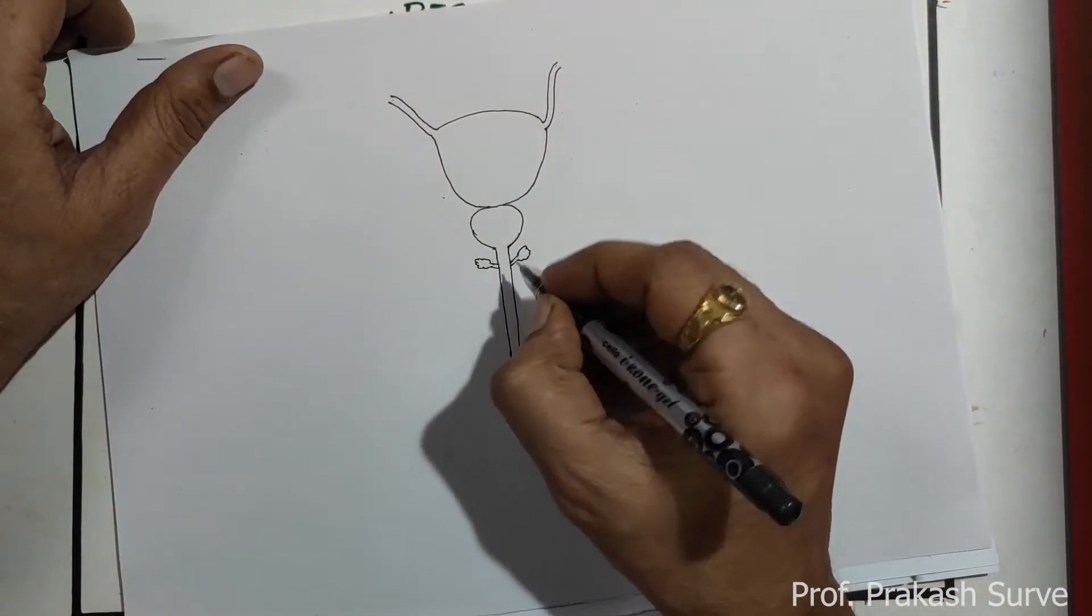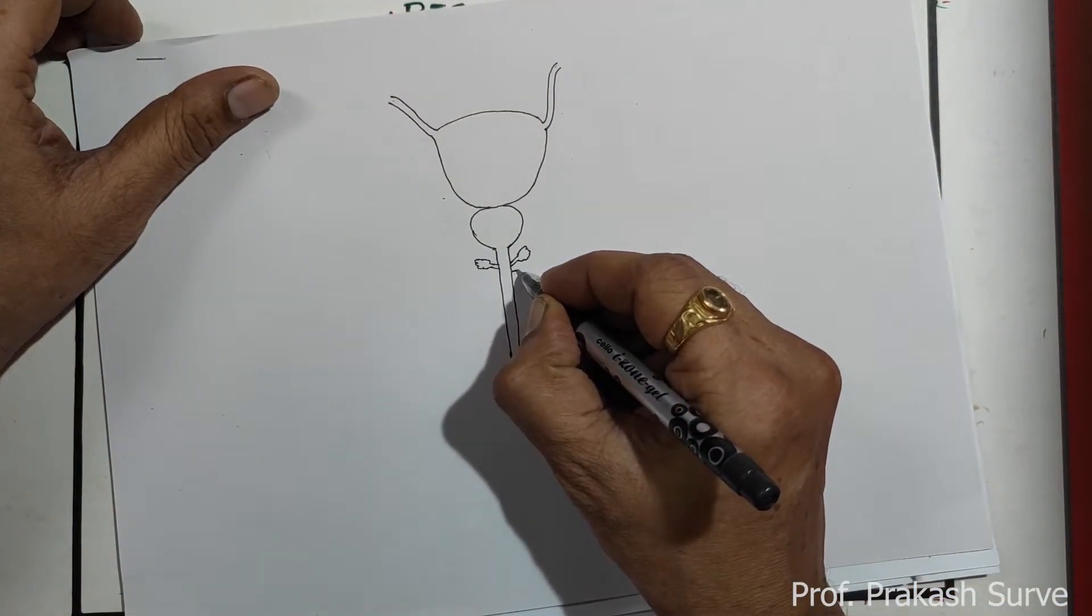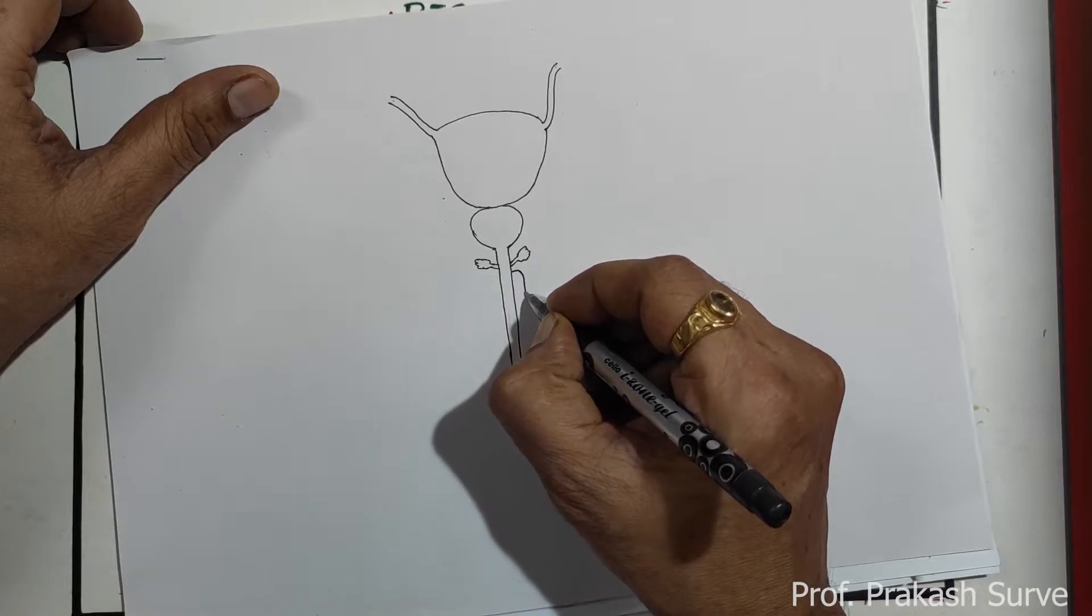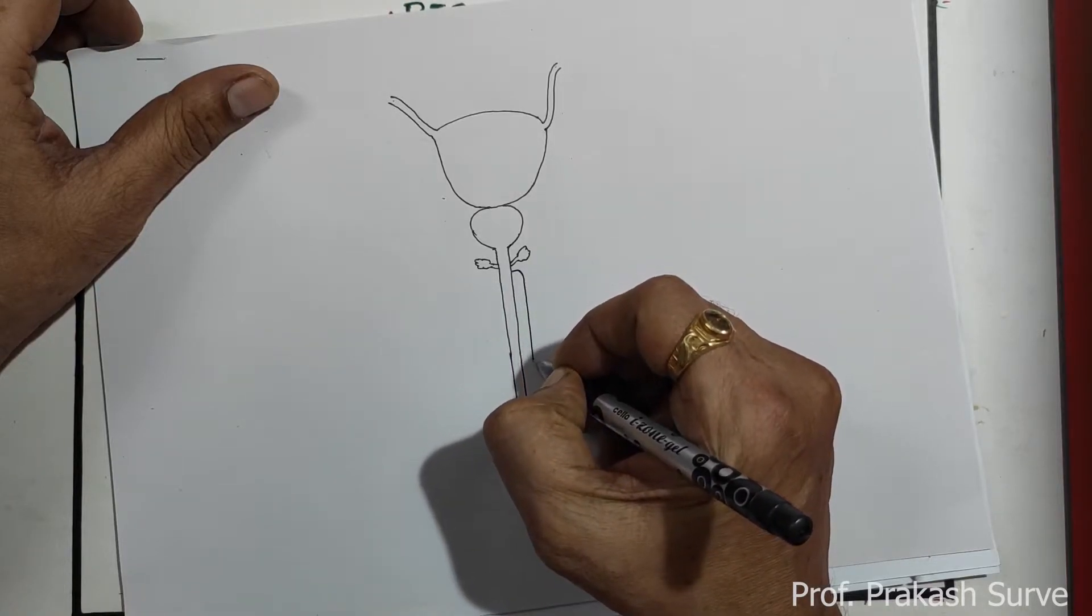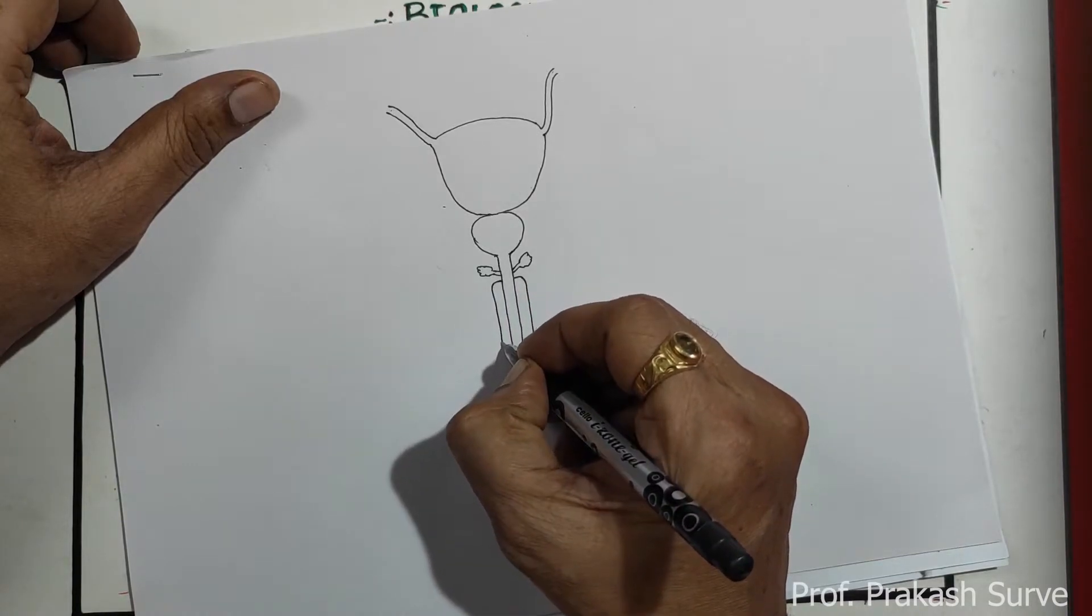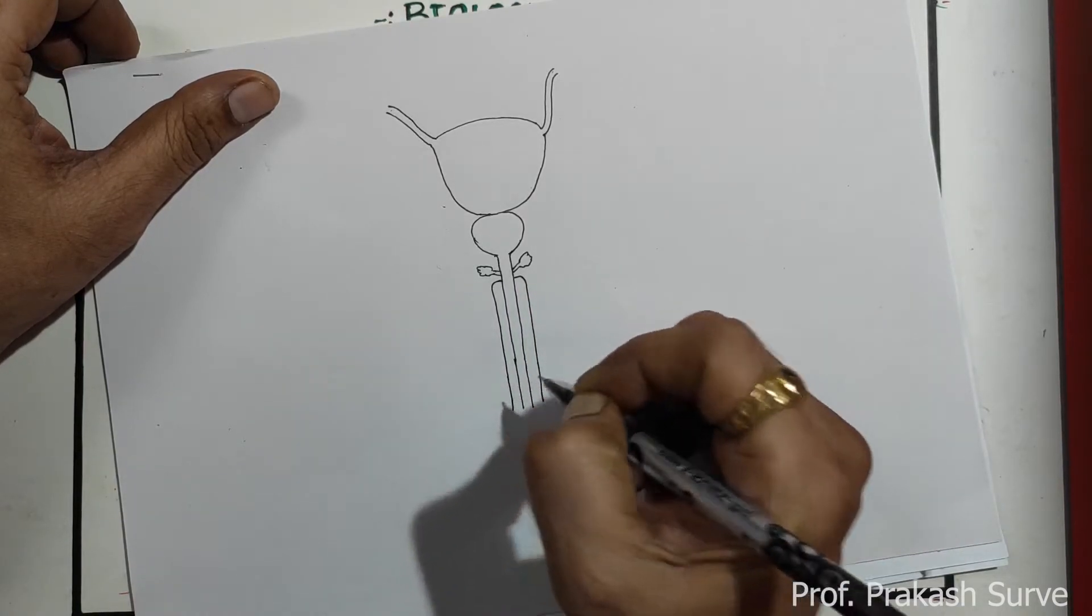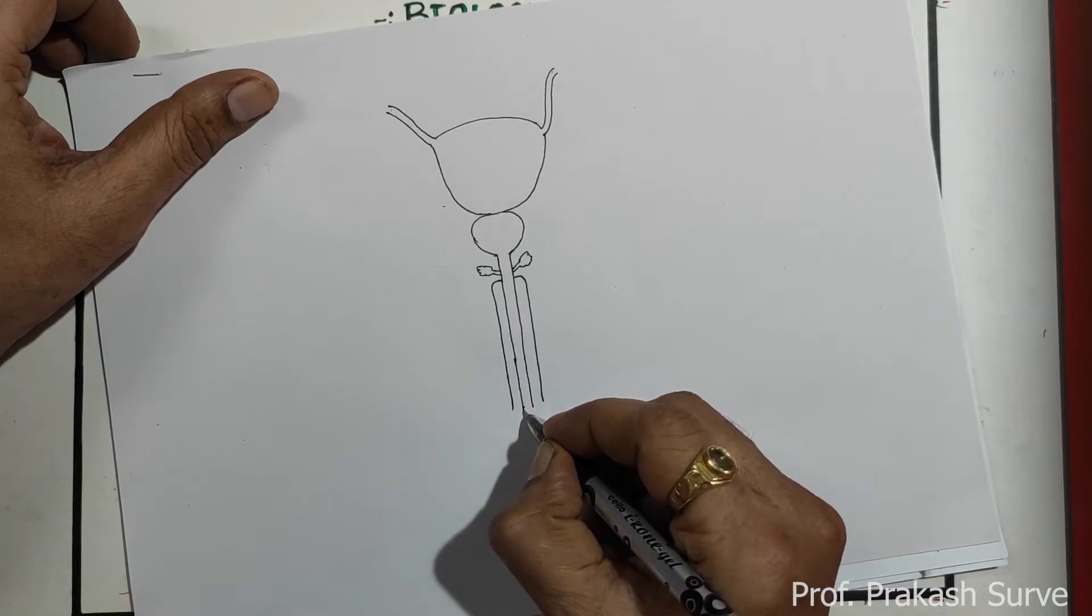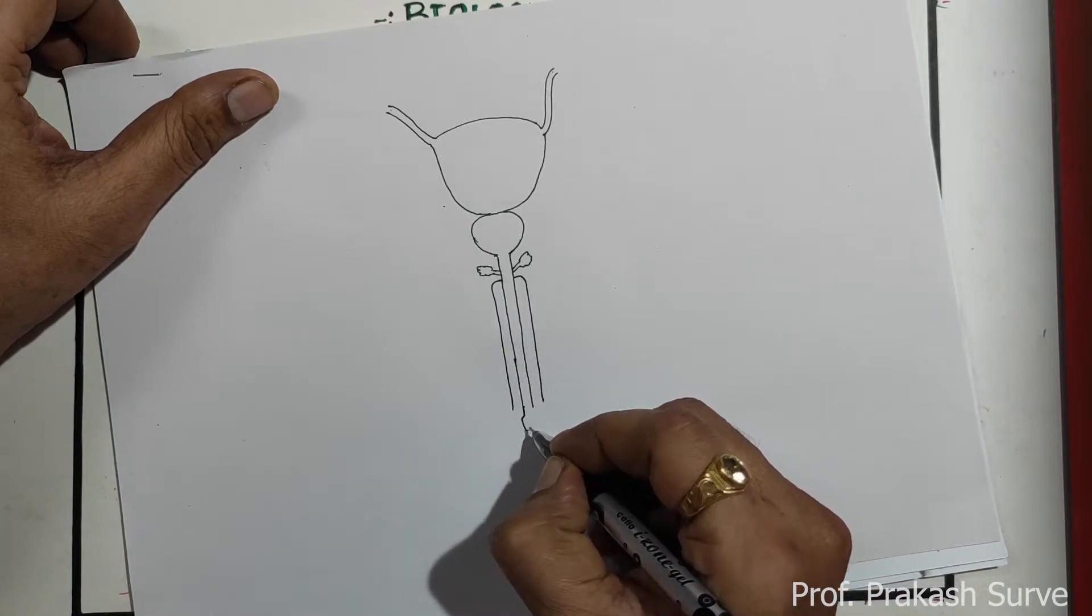Now we'll draw the structure of penis, so from here draw a line parallel to this. From here also draw a line parallel to this. This is the end of the urethra.